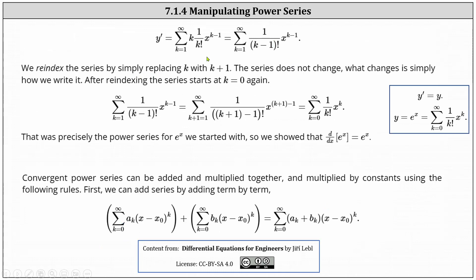From here, we can re-index the series by replacing k with k plus one. For the lower limit of the sum, we have k plus one equals one, so subtracting one on both sides gives k equals zero. Simplifying the formula, we have one divided by the quantity k plus one minus one factorial, which simplifies to one divided by k factorial. And for the exponent on x, we have x raised to the power of k plus one minus one, which gives us x to the power of k. Notice this power series is precisely the power series we started with for e to the x. We just showed using power series that the derivative of e to the x is e to the x, which satisfies the differential equation y prime equals y.